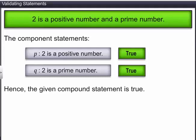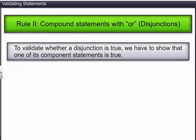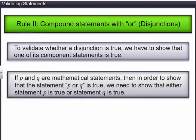Rule 2 is used to validate compound statements with the connective word 'or'. To validate whether a disjunction is true, we have to show that at least one of its component statements is true. If P and Q are mathematical statements, then in order to show that the statement 'P or Q' is true, we need to show that either statement P is true or statement Q is true.